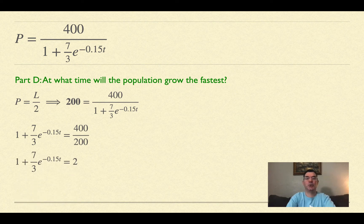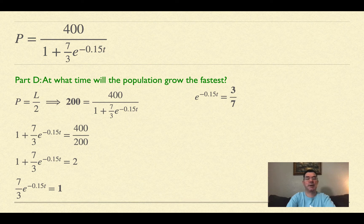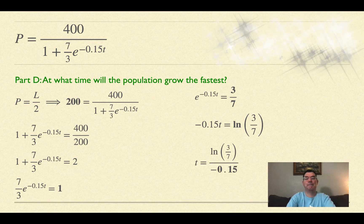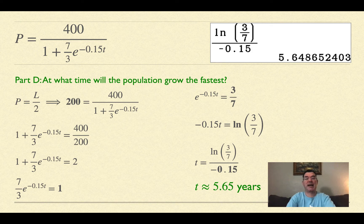400/200 is 2, subtract 1 from both sides, multiply by 3/7, take the natural log, and divide by -0.15. That gives 5.648 or 5.65 years. That's when the population will be growing the fastest.